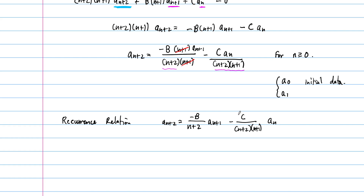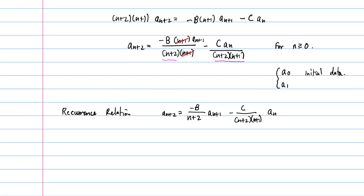Our final recurrence relation is: a sub n+2 equals −b/(n+2)·a sub n+1 minus c/((n+2)(n+1))·a sub n. Depending on what B and C are, and the initial conditions a sub 0 and a sub 1, we can find the first few terms by investigation and hopefully write down a nice pattern or closed formula for the solution of the differential equation.